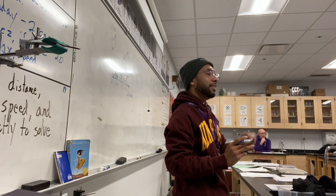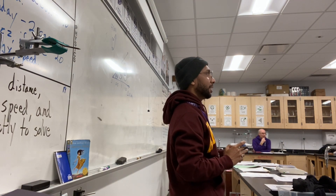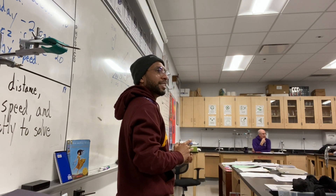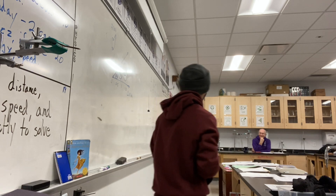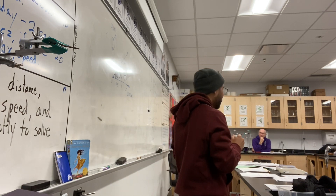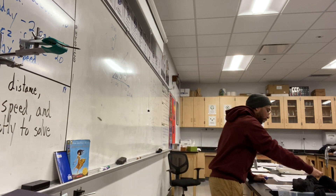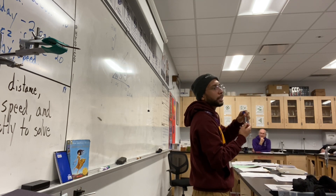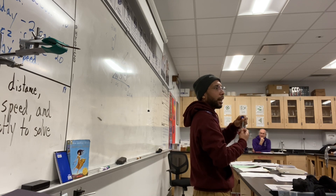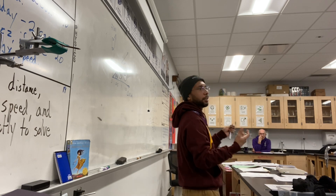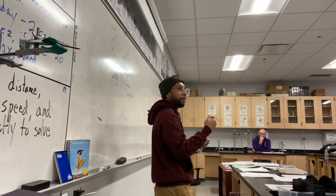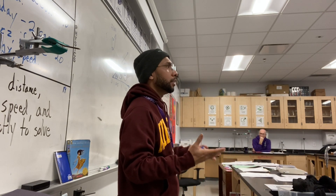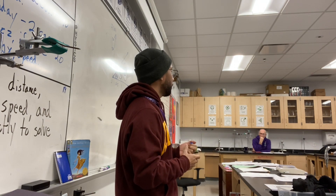Gravity was pulling down, but if we consider the force of our arm — say we just stretch the spring using our arm — then there's one variable: the force of our arm. But if we put a mass on it, there are two variables: the mass and how hard gravity is pulling it down.